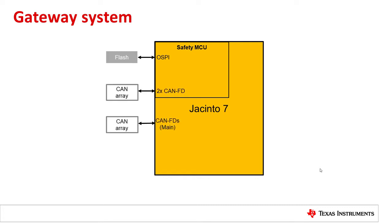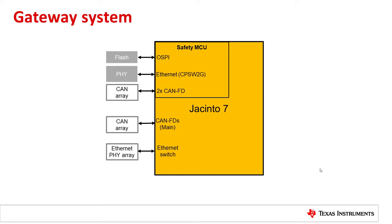Gateway systems need to handle CAN traffic from multiple CAN nodes in the vehicle network. The connection to multiple CAN nodes is represented as a CAN array in the hardware block diagram. CAN-FD modules from the safety MCU island and the main domain can be used for this purpose. We are also witnessing Ethernet being adopted as a high-bandwidth network backbone for communications inside a car. Gateway systems play a key role in providing intra-domain and inter-domain high-bandwidth connectivity over Ethernet, often requiring capabilities for packet inspection, forwarding, and filtering.